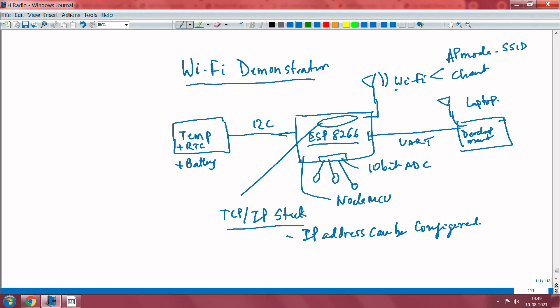You can see the Wi-Fi is here. It also has a 10-bit ADC and a UART port, which you can use for development purposes to dump the code onto the ESP's flash. You can use this UART module here.